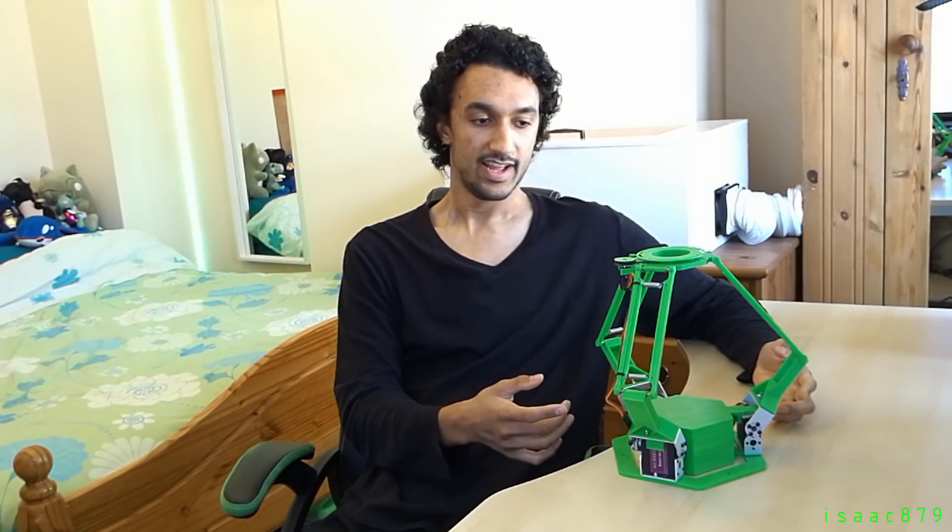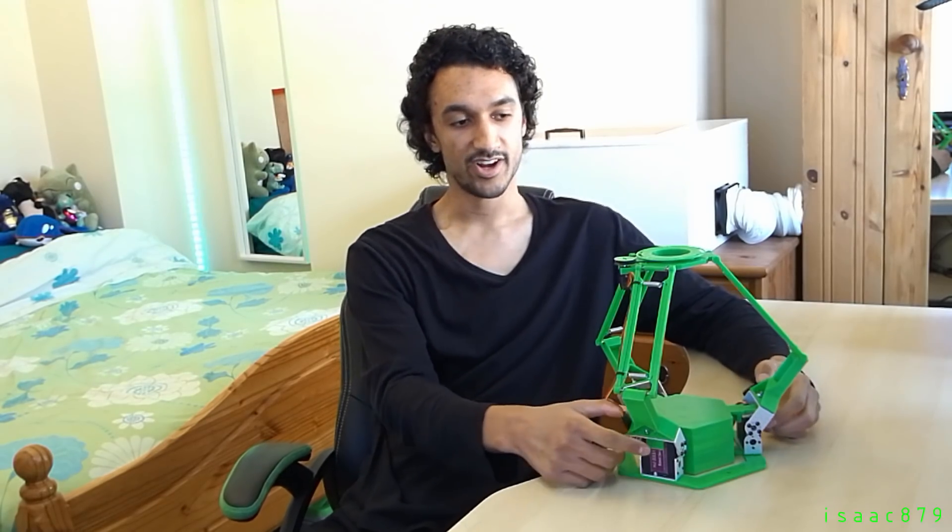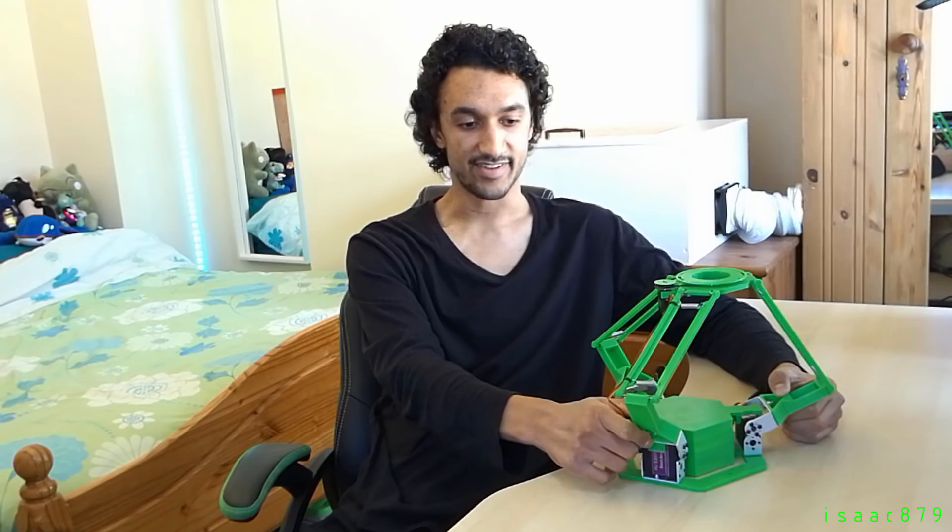This is my 3D printed Delta Robot platform. A Delta Robot is a kind of parallel robot that uses three actuators to move three arms to position the end effector.